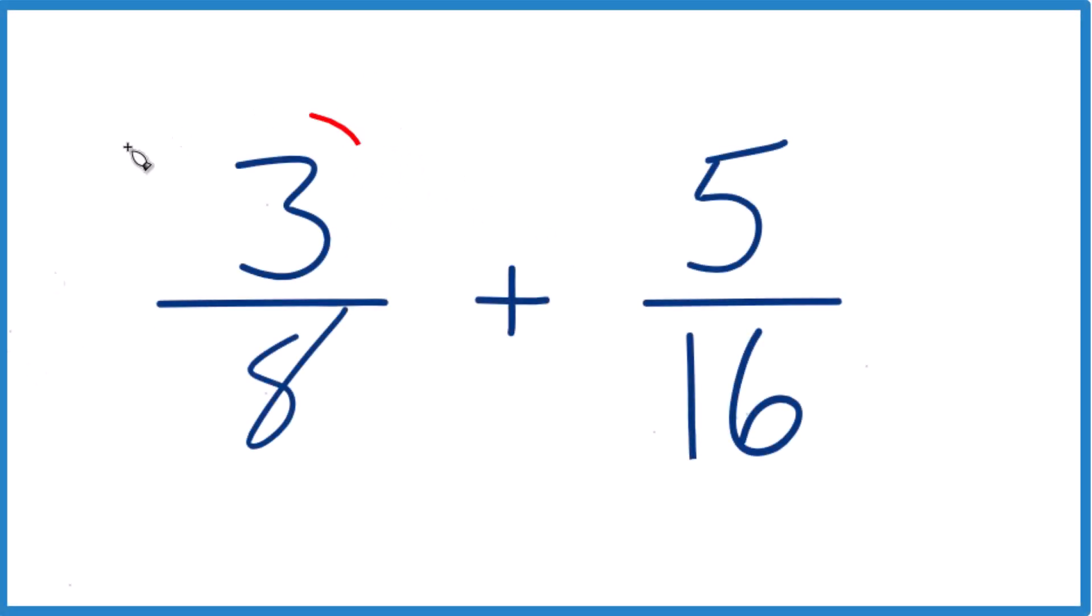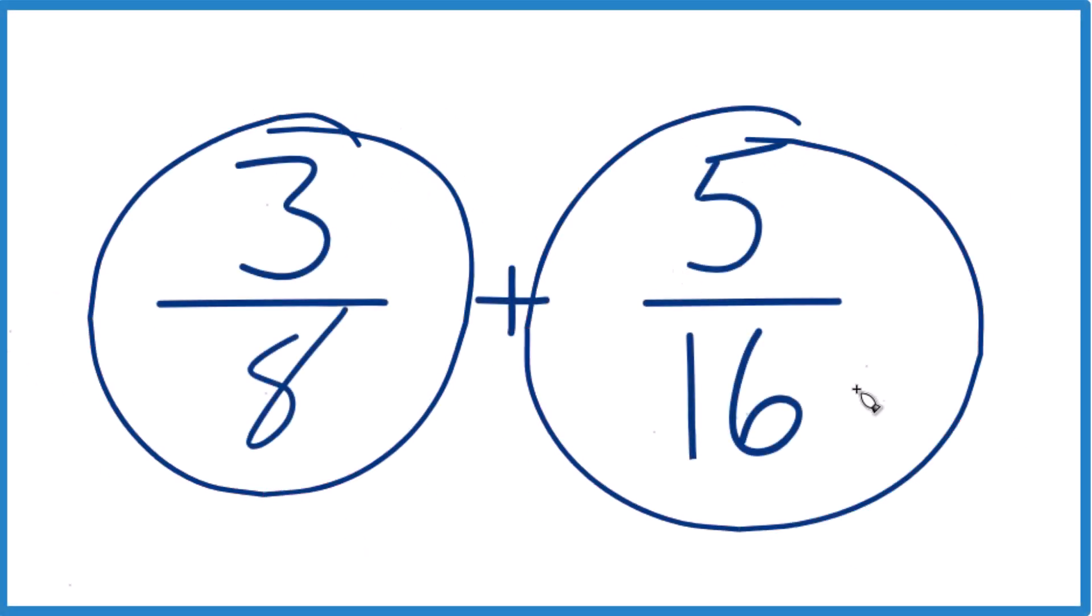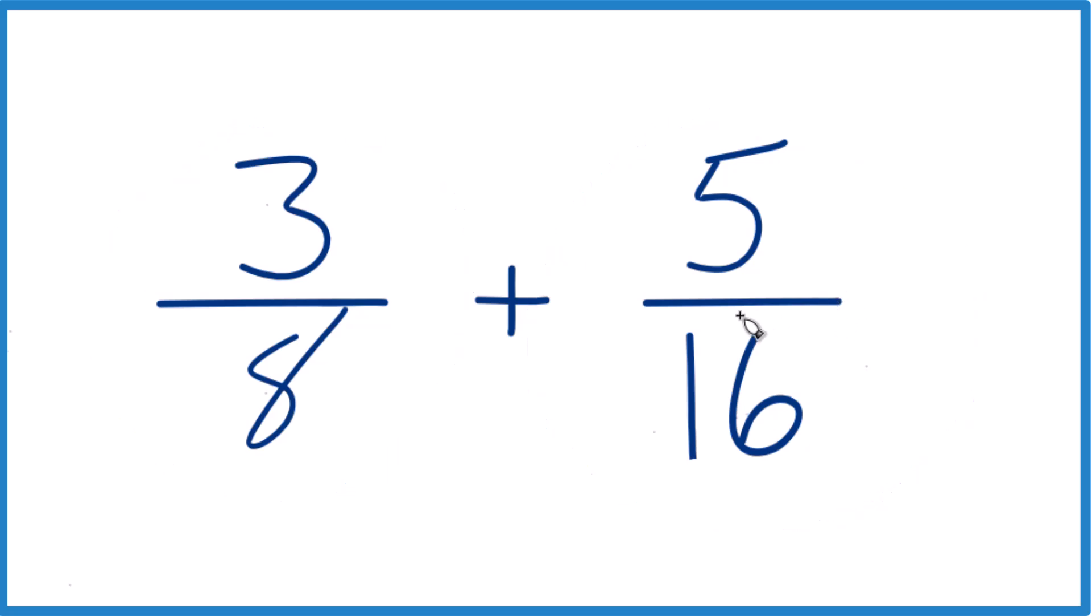All right, here's how you add 3 eighths plus 5 sixteenths. What we need to do is get a common denominator. Right now we have 8 and 16.